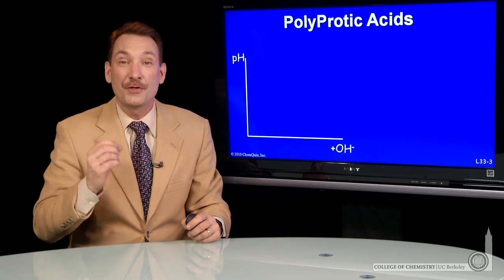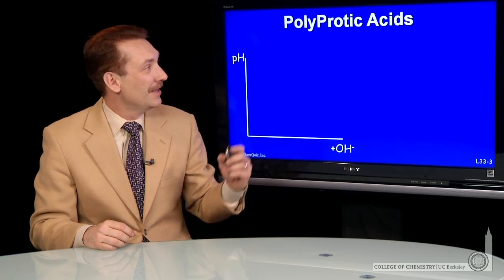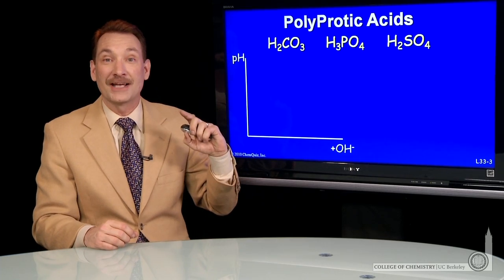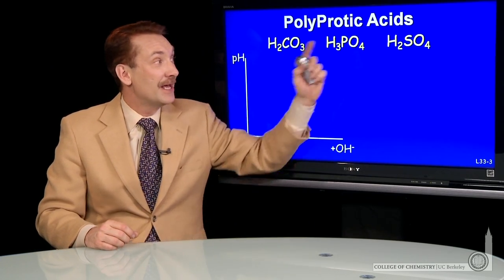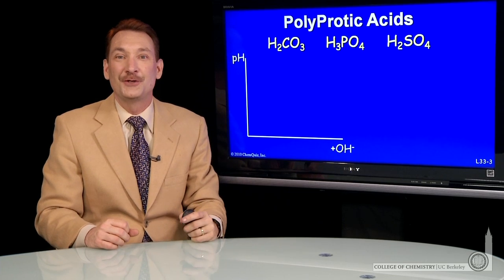Polyprotic acids are compounds with more than one acidic proton. Some examples are carbonic acid with two acidic protons, phosphoric with three, and sulfuric acid with two acidic protons.